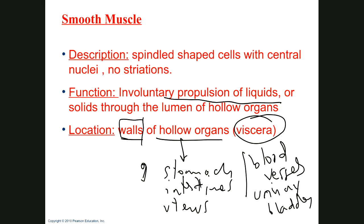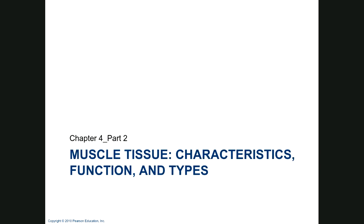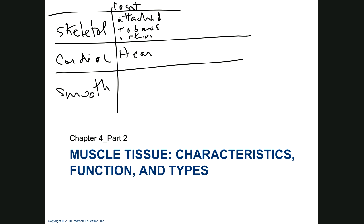Before jumping to nervous tissue, let me make a quick summary chart of muscle tissue types: skeletal, cardiac, and smooth. For location: skeletal is attached to bones and skin; cardiac is in the walls of the heart; smooth is in the walls of hollow organs.